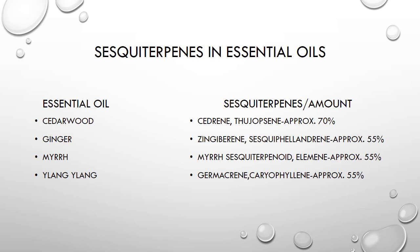These are some specific sesquiterpenes found in essential oils. The essential oils on this slide are cedarwood, ginger, myrrh, and ylang ylang. In the next column are the sesquiterpenes and the amount found in each essential oil — I'll leave it on screen so you can see the amounts.